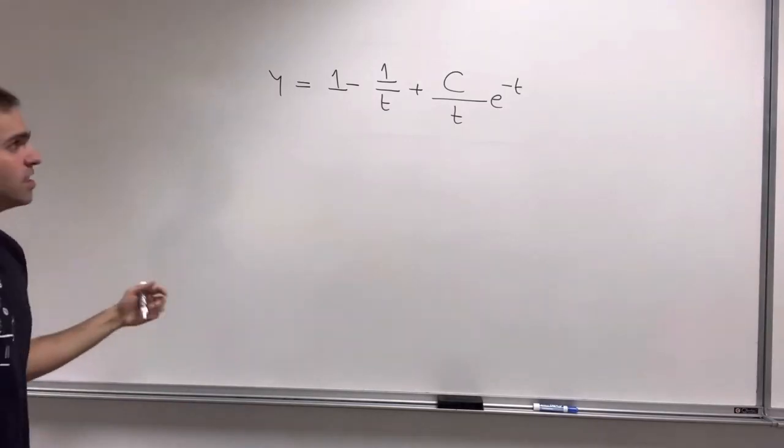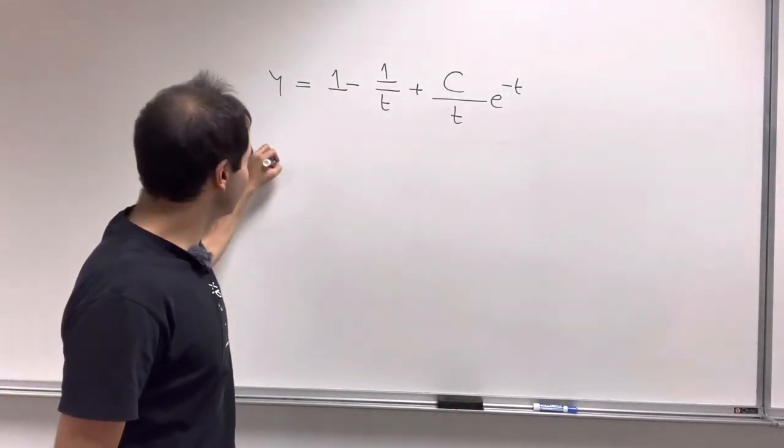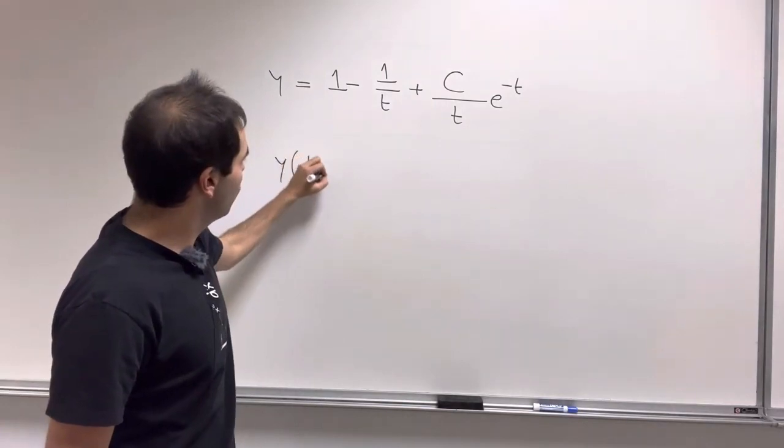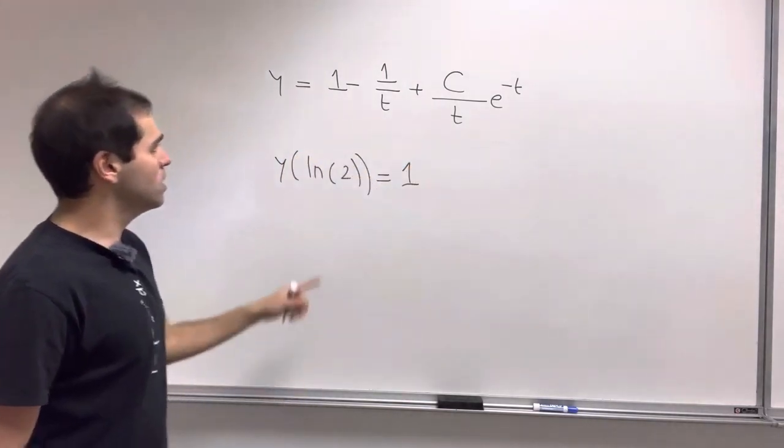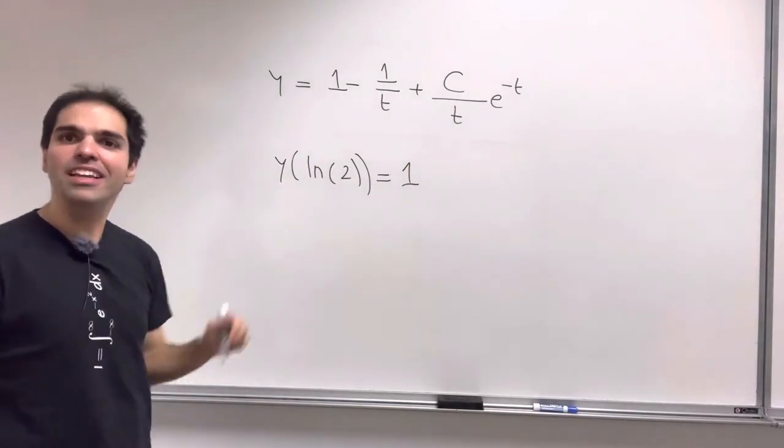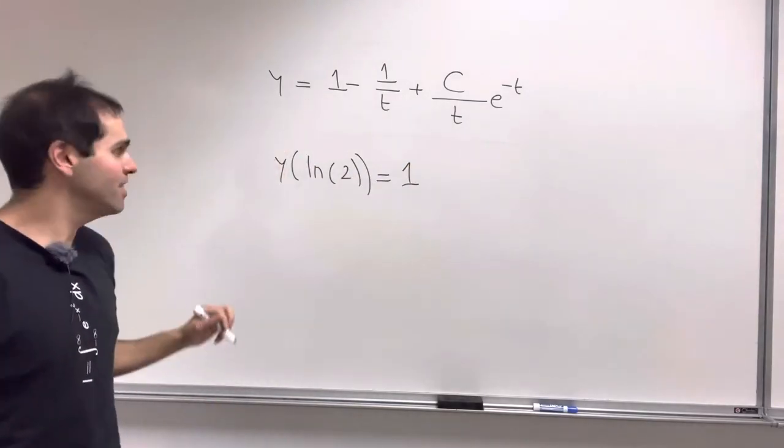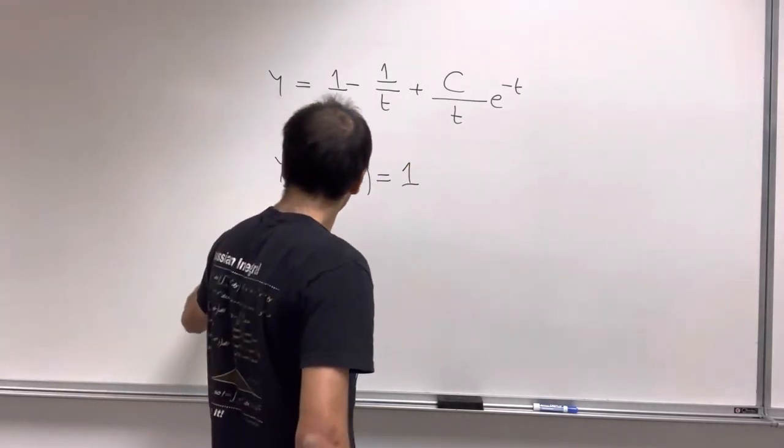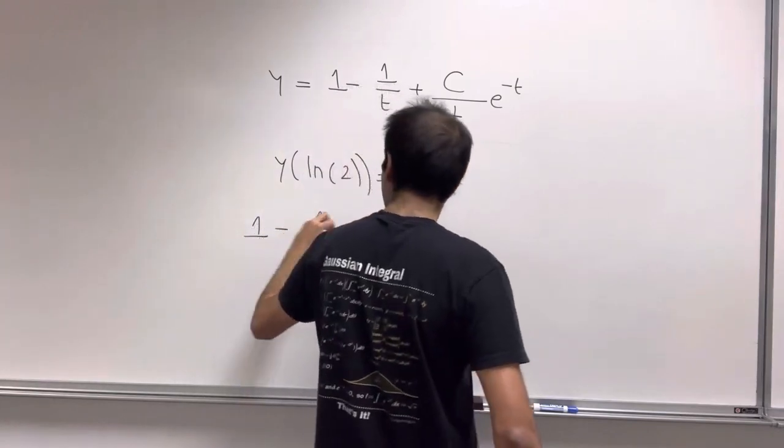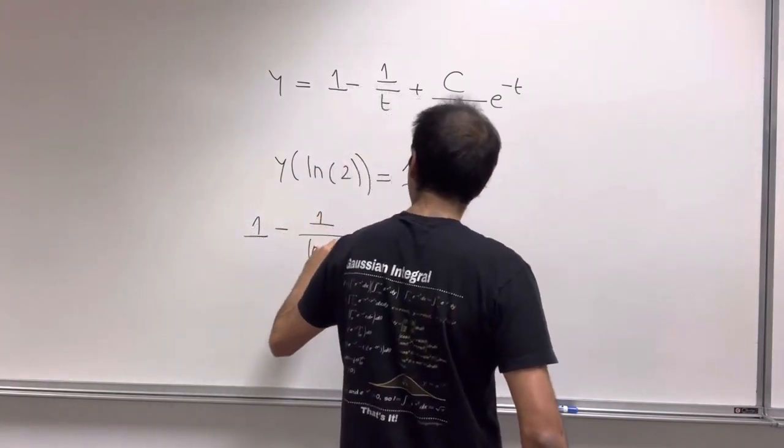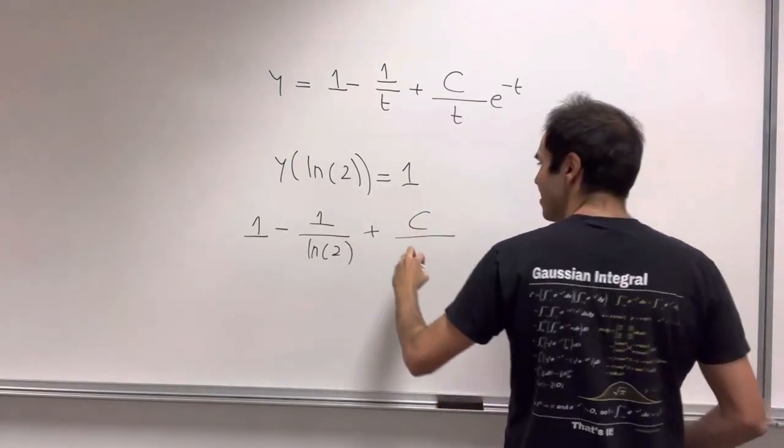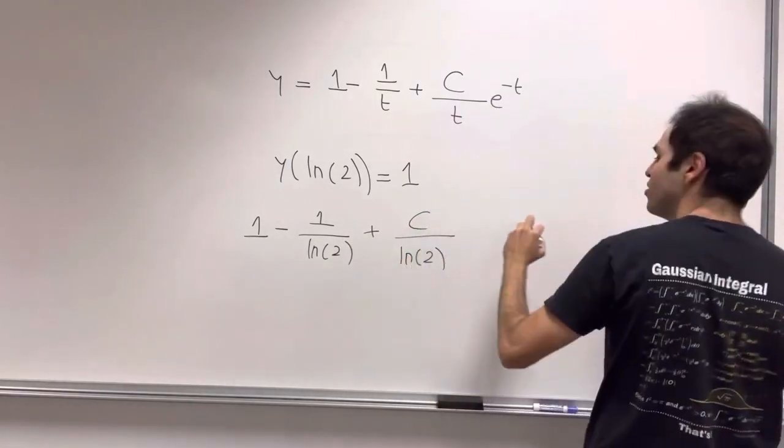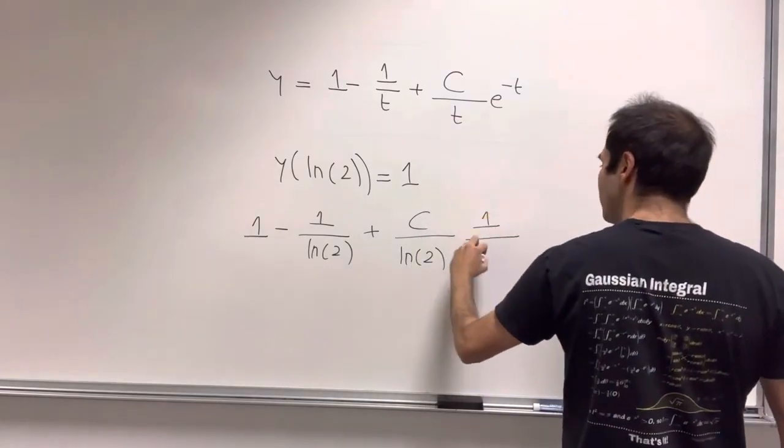And last but not least, remember to use the initial condition, namely y(ln 2) = 1. So let's just plug in ln 2 in this gibberish. So 1 minus 1/ln(2). Lots of ln degenerates today. Over C/ln(2). And then e^(-t), so 1/e.